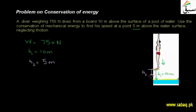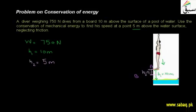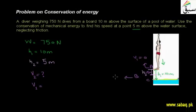We neglect friction forces — the forces resisting the diver's motion — because air resistance acts in the opposite direction. We label the points: point A is where the diver stands on the board, point B is the intermediate point after traveling 5 meters, and point C is the surface of the pool. We have to calculate the velocity V2 at point B. At point A, V1 equals zero because the diver is at rest.